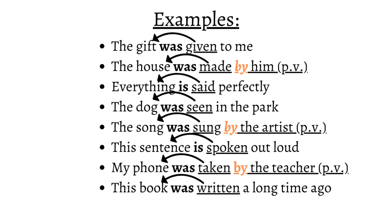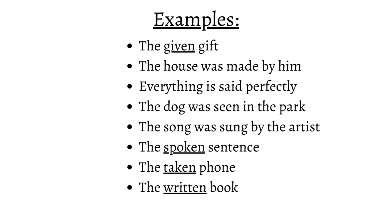This is what makes the passive voice, but again, it's a future topic. "Given" describes the gift. "Seen" describes the dog. "Spoken" describes the sentence, and so on. Just like before, we can use the adjectives formally, but only some can be used for rephrasing because others are not logical enough. Some examples are: the given gift, the spoken sentence, the taken phone, and the written book. Others can also change only if their adjective makes sense.